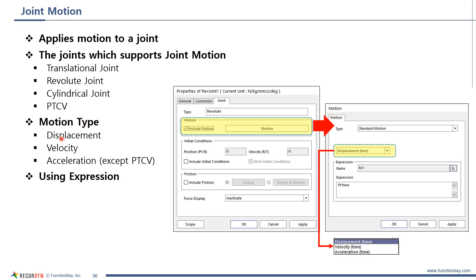There are three types of joint motion. And joint motion is defined using expression.